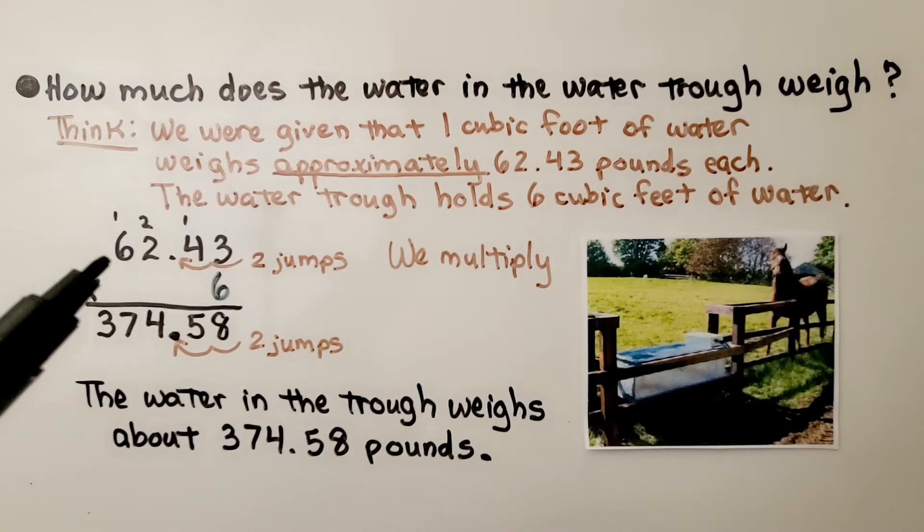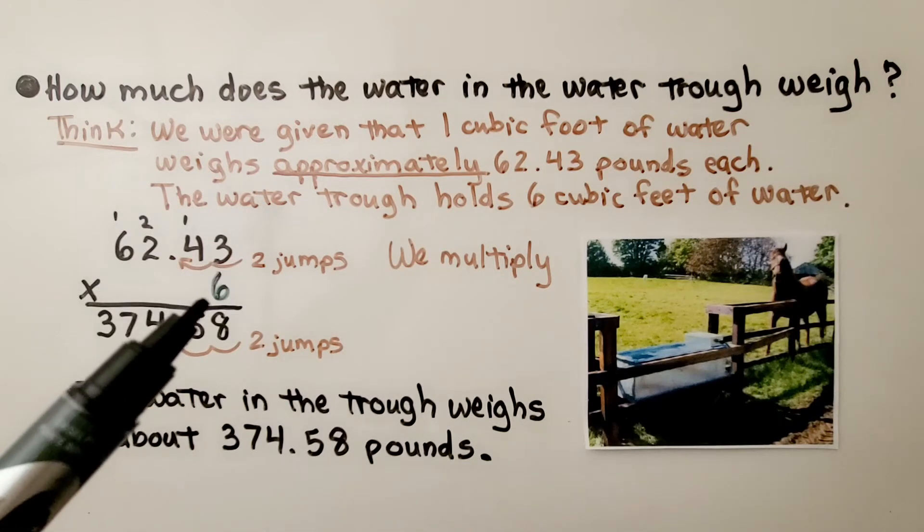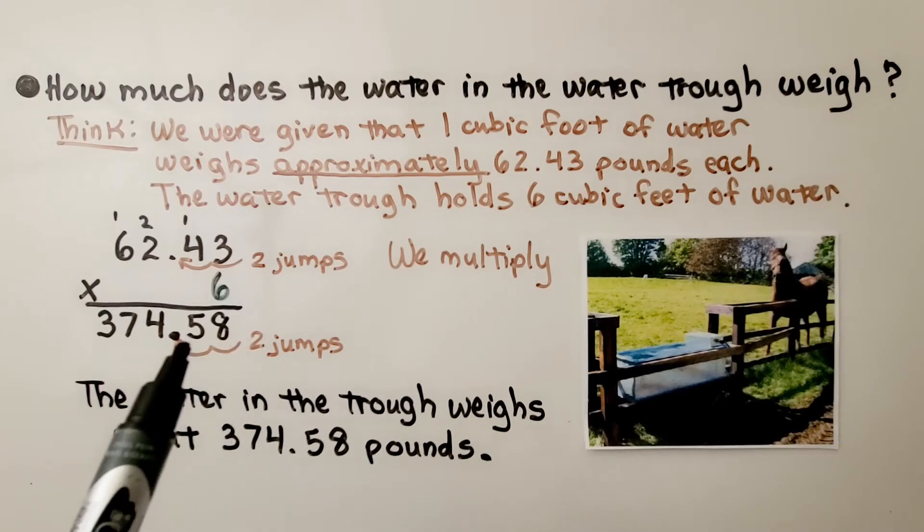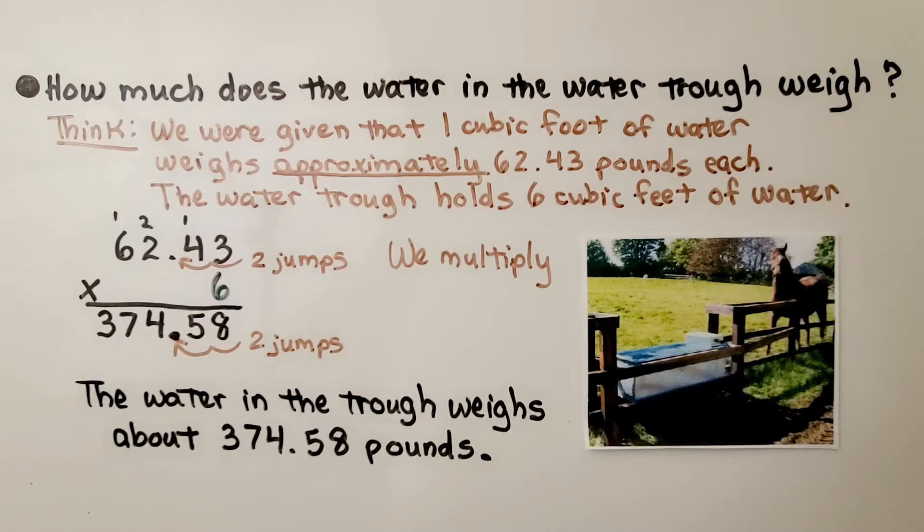We multiply the 62.43 times 6. There are 2 decimal jumps in the problem. There's going to be 2 decimal jumps in the product. We know the water in the trough weighs about 374.58 pounds.